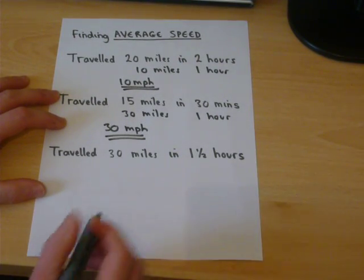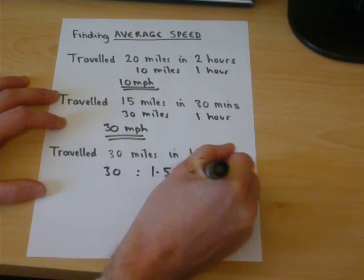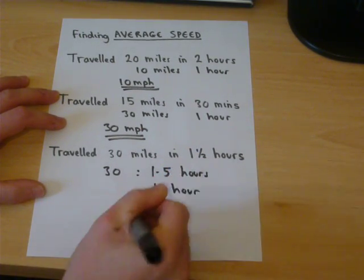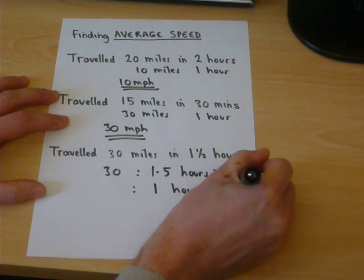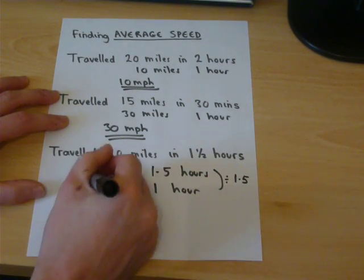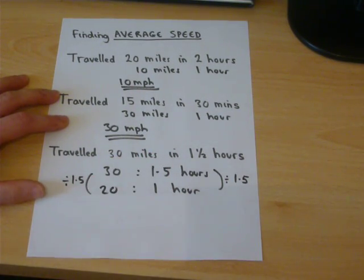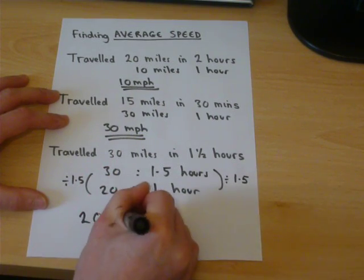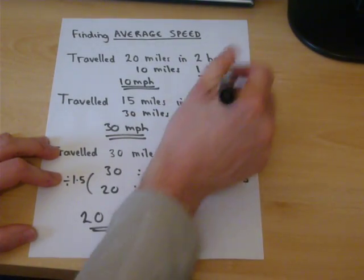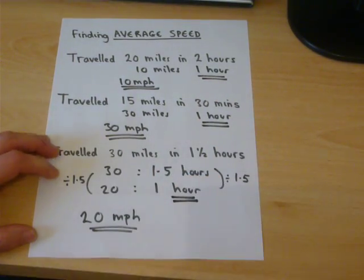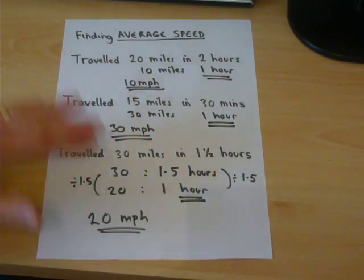This one is a bit fiddlier. If you do 30 miles in 1.5 hours, then to find the speed for 1 hour, we can divide by 1.5. 30 divided by 1.5 gives us 20 miles in 1 hour. So his average speed is 20 miles per hour. In each case, the key is finding the distance in 1 hour, because the context is miles per hour.